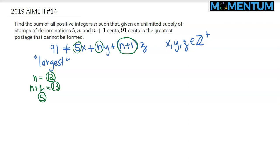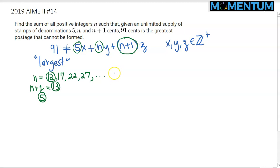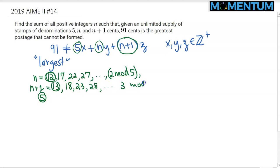Which numbers can be hit? Starting with 12, I can keep adding fives to it. So I can hit 17, 22, 27 — all of these. So any number congruent to 2 mod 5, given that the number is more than 12, is hit. And the same for 13: 18 is easily hit, 23 is hit, 28 is hit — simply by using a single 13 and adding fives. So any number congruent to 3 mod 5 can be hit as well.